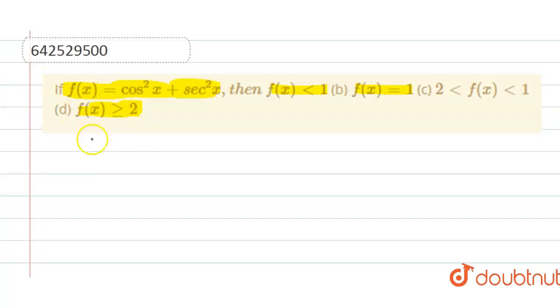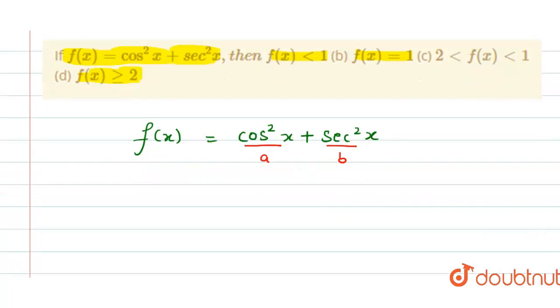Let us first rewrite the function. We are given cos²x plus sec²x. Now, if I treat cos x as a and sec x as b, I can see that this is a² plus b².